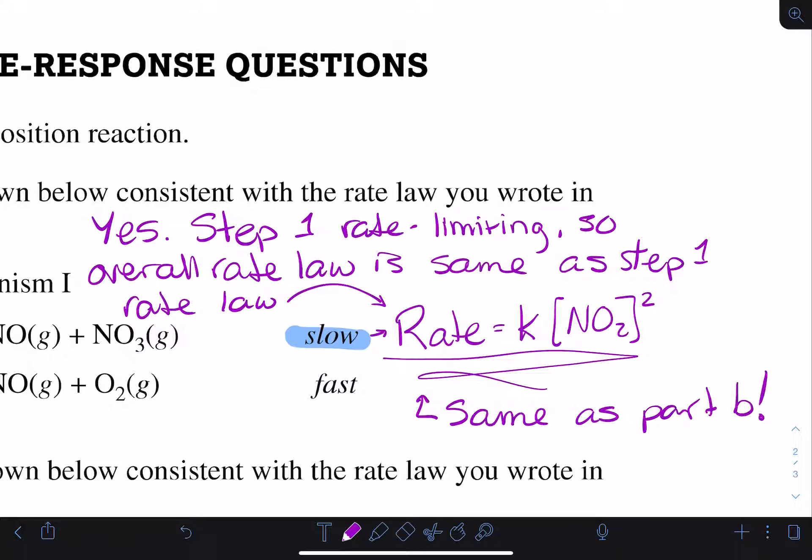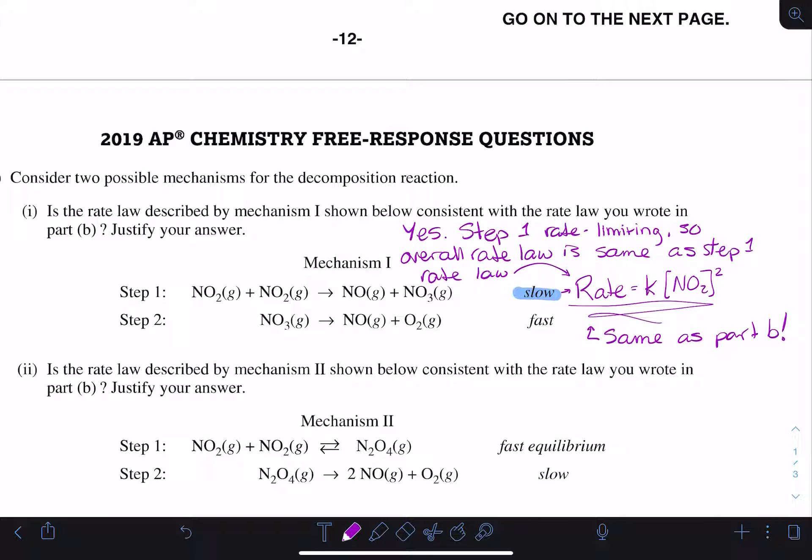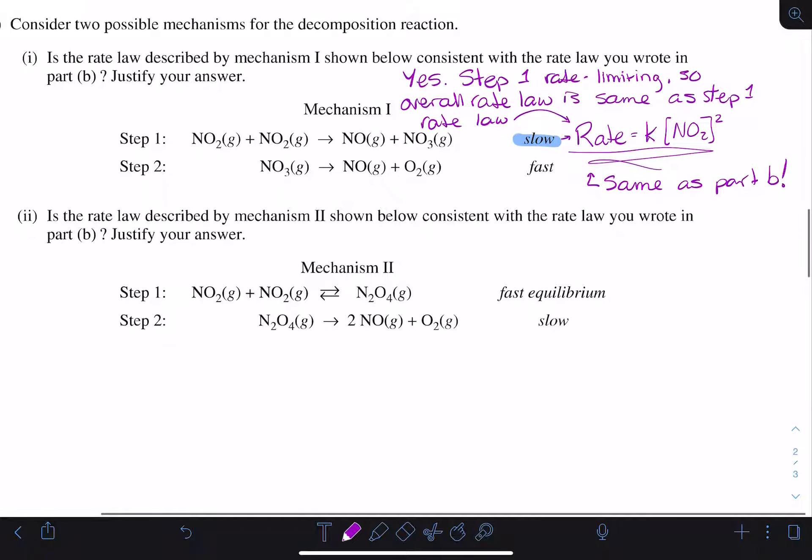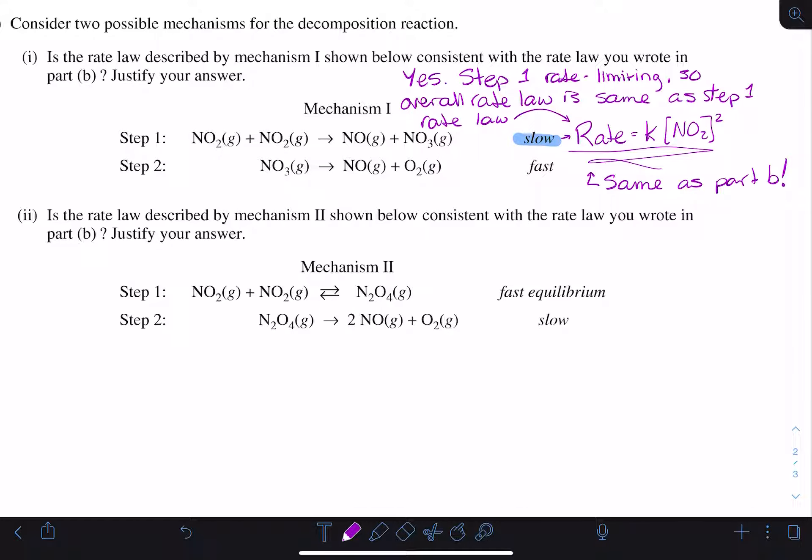We're going to want to do the same thing for mechanism 2. This is also asking us is mechanism 2 consistent with the rate law we wrote in part B? Justify your answer. This one has the second step being slow, which means we're probably going to have more work.